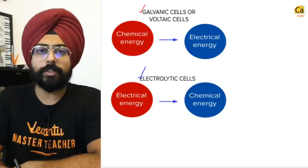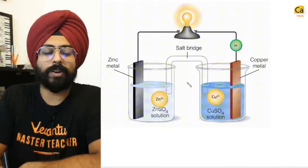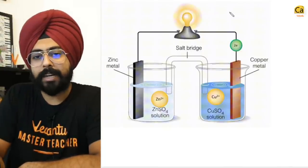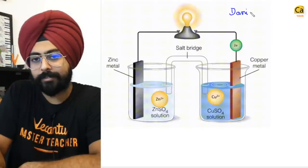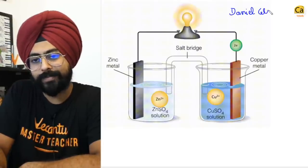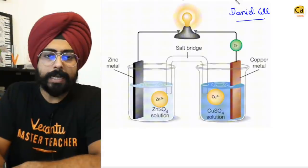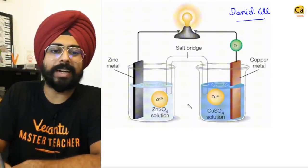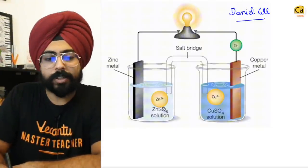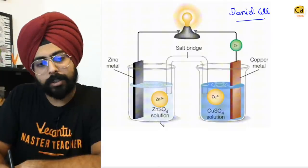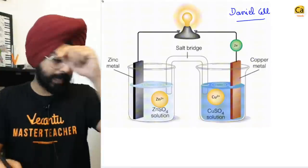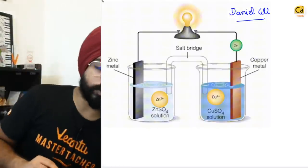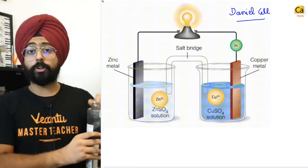The very first galvanic cell we looked at was the zinc and copper cell. What was the name of this cell? This was the Daniel cell. In the Daniel cell, on the left-hand side you have zinc and on the right-hand side you have copper. Can you quickly tell me which one of these species is getting oxidized?